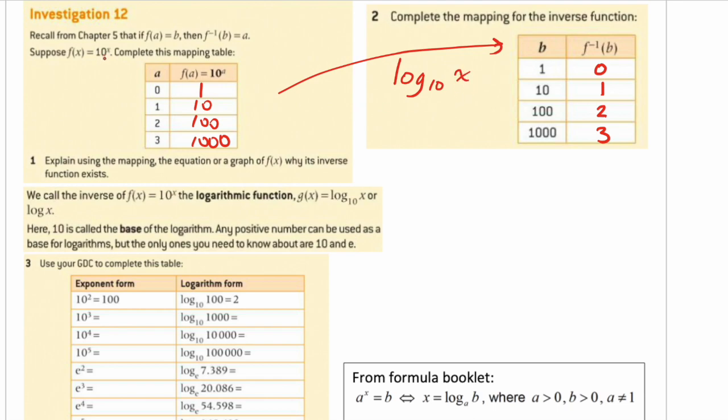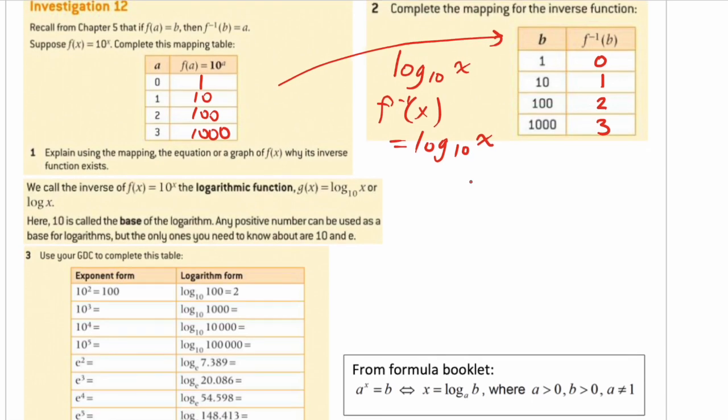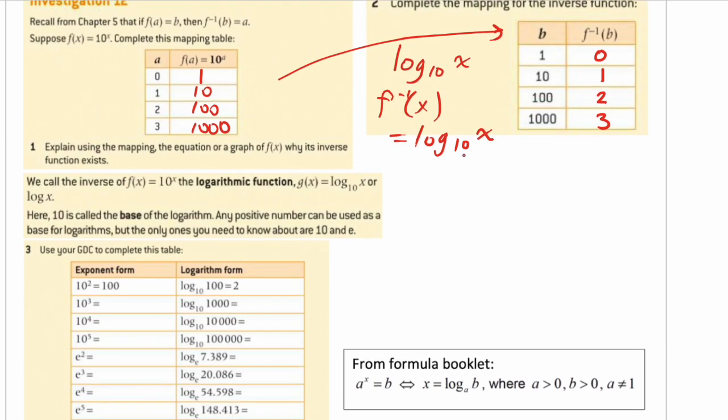So f of x is 10 to the power of x. Then the inverse is log base 10 of x. This is how you read it, and this is what it looks like. The notation is a bit off-putting, I suppose. But log base 10 of x is the inverse of 10 to the power of x, and often we leave this 10 out. On your calculator, if you just type log x, it means log base 10 by default.